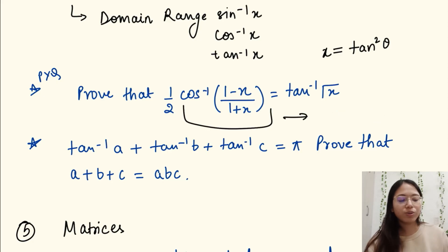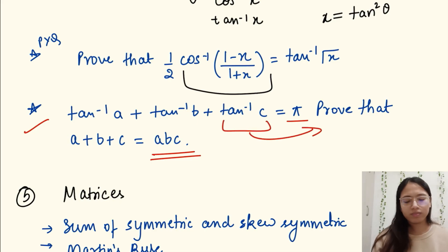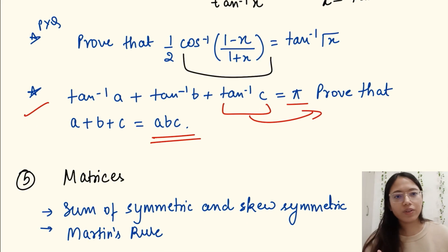Next is tan inverse a plus tan inverse b plus tan inverse c is equal to pi, that is 180. Prove that a plus b plus c is equal to abc. You will have to take this here on the right hand side and then prove it. These are the frequently asked questions.